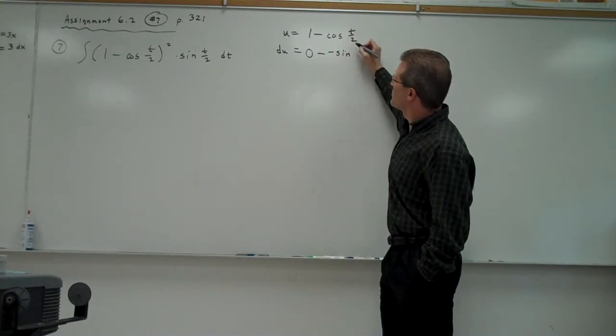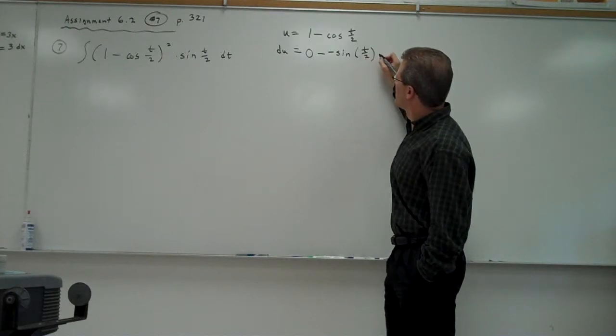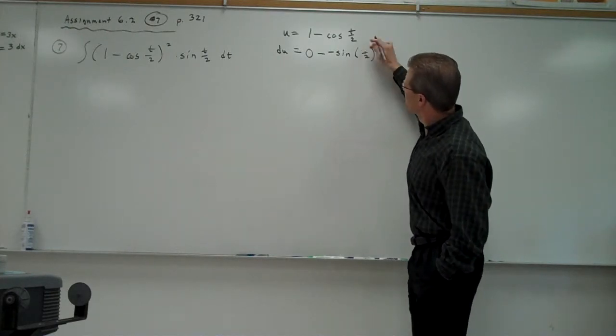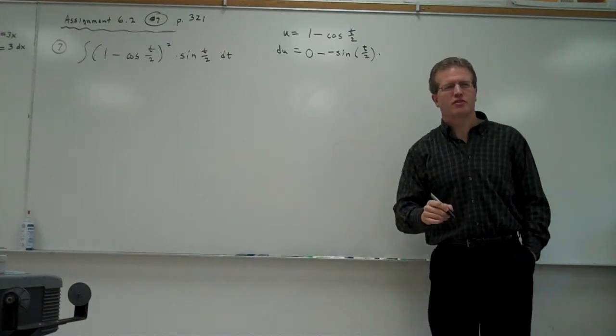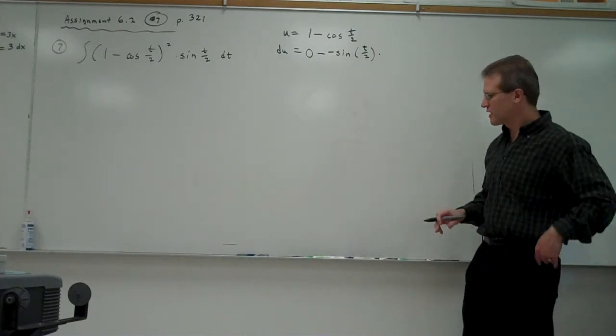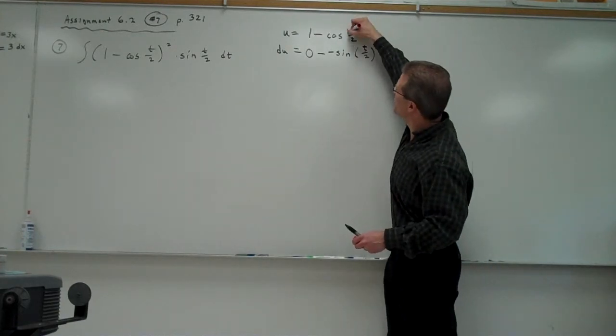Then you're going to copy down the t over 2. This is the chain rule. It's a t, not a plus on the top. Write that a little better. Times. Then you have to do the derivative of t over 2. With the chain rule, you have to link that on. Now, don't make this too hard.